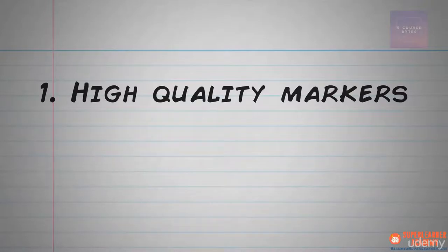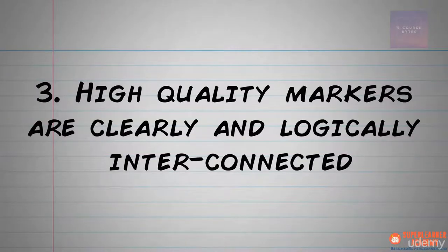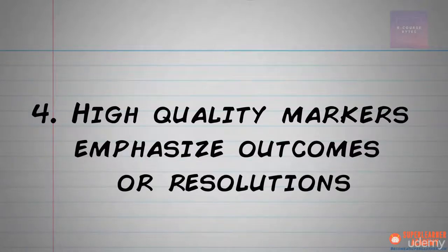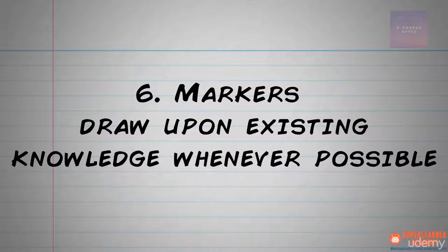First and foremost, high-quality markers represent details, not overall concepts, and we can describe them in one to two words. Second, high-quality markers are themselves imbued with rich detail, such as colors and textures. Number three, high-quality markers are clearly and logically interconnected to one another, both backwards and forwards. Number four, high-quality markers emphasize outcomes or resolutions, not questions or initial conflicts. Number five, high-quality markers come in volume — the more, the merrier. And lastly, number six, markers draw upon existing knowledge wherever possible.